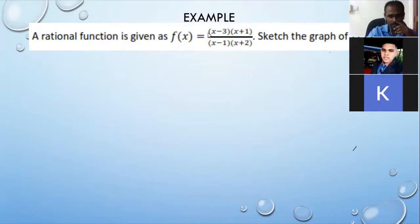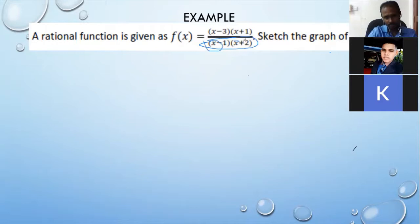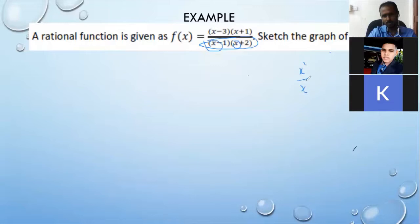You can see x minus 3 and x plus 1 in the numerator — there are two x terms. When you multiply x and x you get x squared. In the denominator you have x minus 1 and x plus 2. When you multiply those two, x times x again gives x squared. So x squared over x squared — whatever is in front of x squared is 1 — so 1 divided by 1 is 1. That's how the horizontal asymptote is 1; you write y is equal to 1.